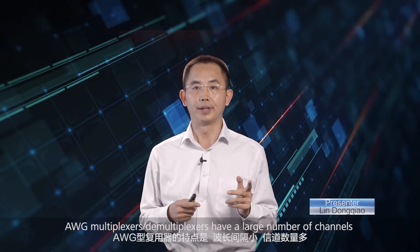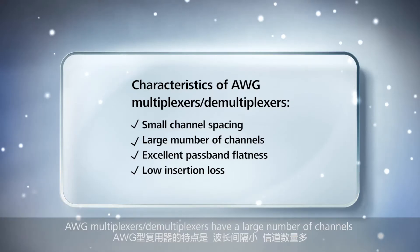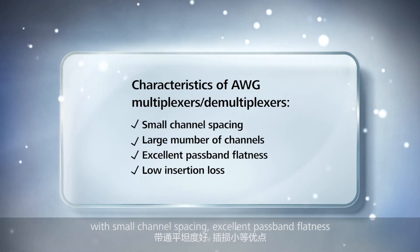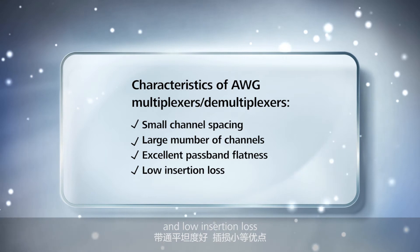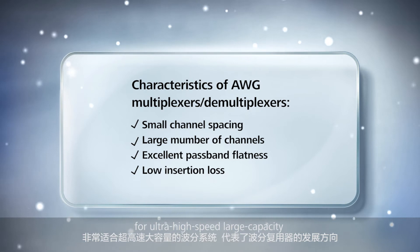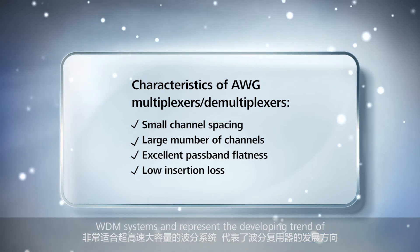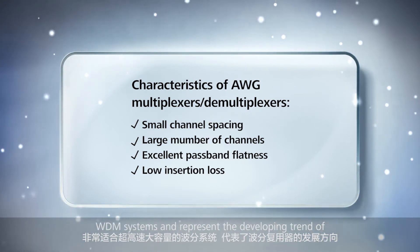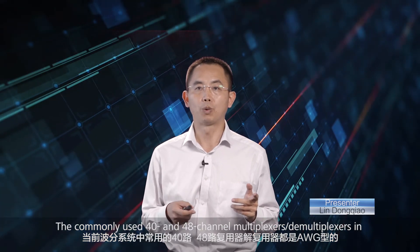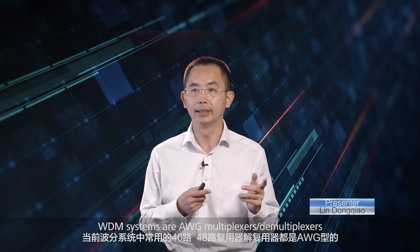AWG multiplexers and demultiplexers have a large number of channels with small channel spacing, excellent passband flatness, and low insertion loss. They are highly suitable for ultra-high-speed, large-capacity WDM systems and represent the developing trend of WDM multiplexing and demultiplexing components. The commonly used 40 and 48 channel multiplexers and demultiplexers in WDM systems are AWG demultiplexers.